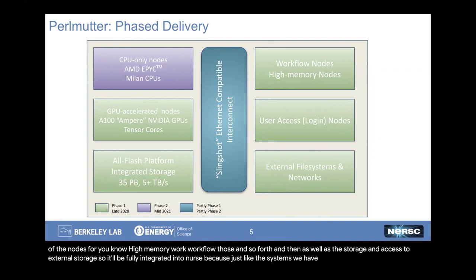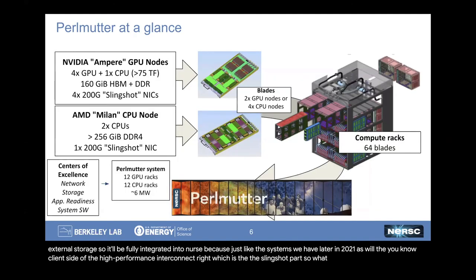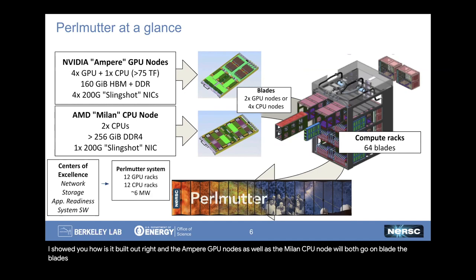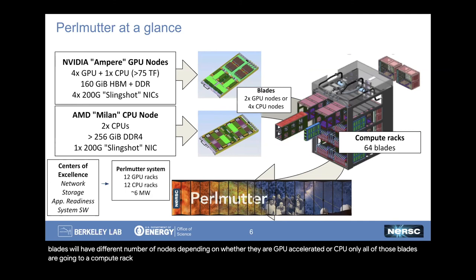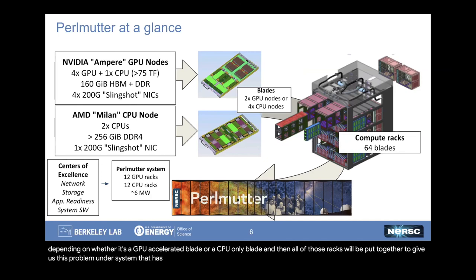The CPU nodes will come in later in 2021, as will the client side of the high-performance Slingshot interconnect. The Ampere GPU nodes and Milan CPU nodes will both go on blades — each rack has 64 blades, giving either 128 or 256 nodes per rack depending on whether it's a GPU or CPU blade. The full system will have 12 GPU racks and 12 CPU racks.